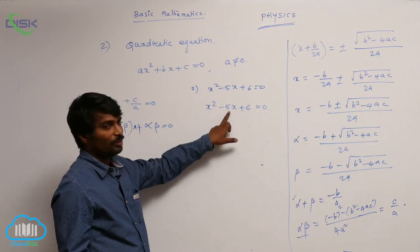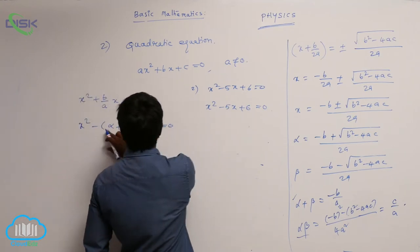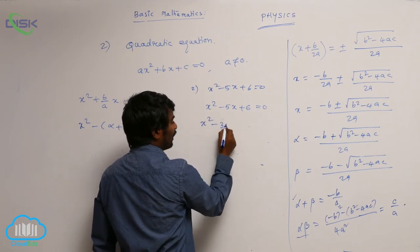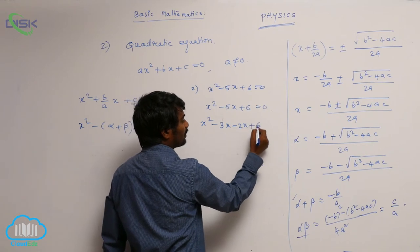So 3 plus 2 will be 5. So sum of two roots. So I can write like this minus 3 plus 2. So 3x minus 2x plus 6 is equal to 0.